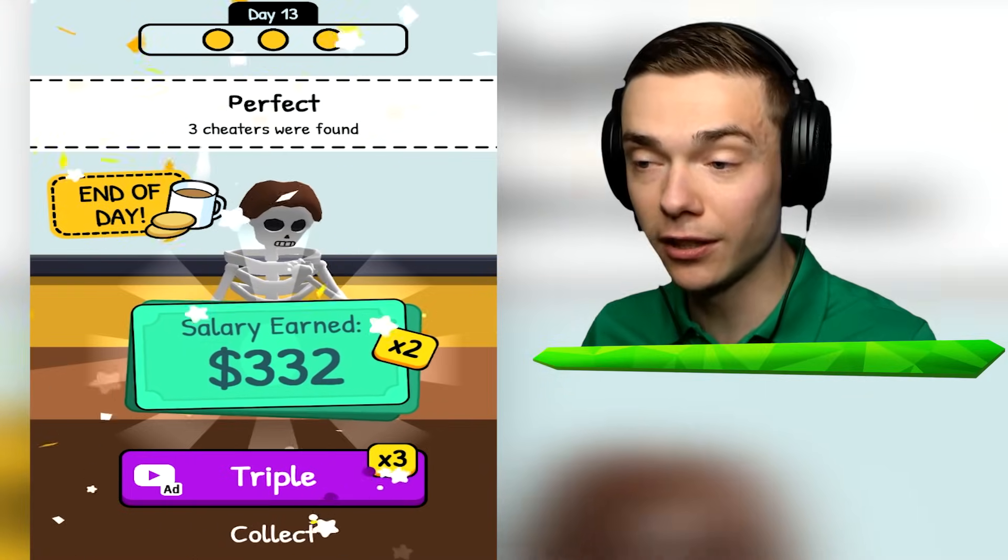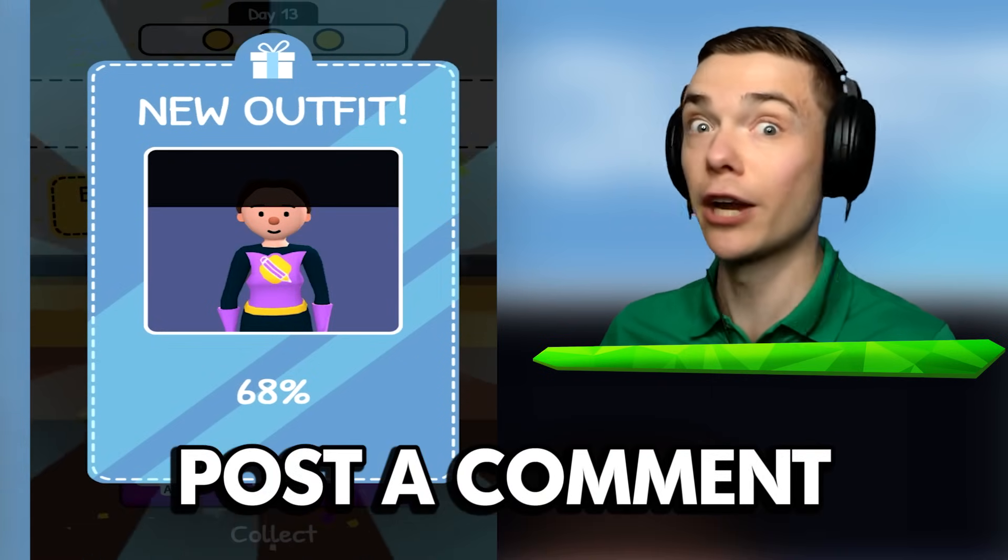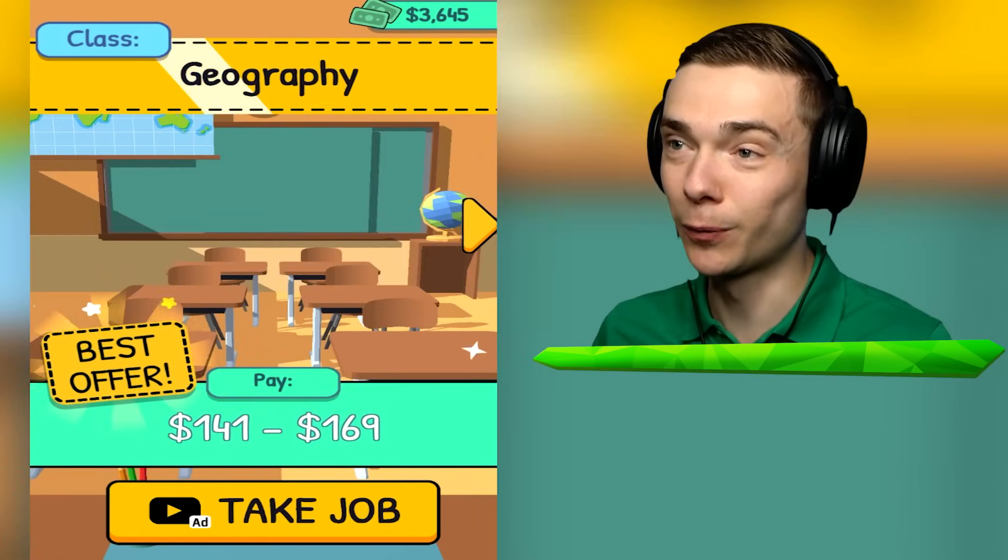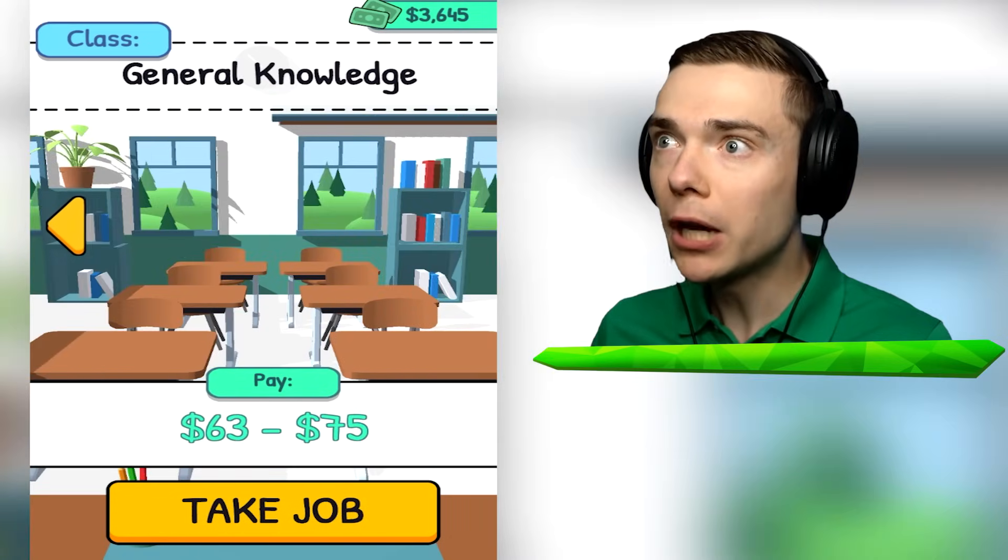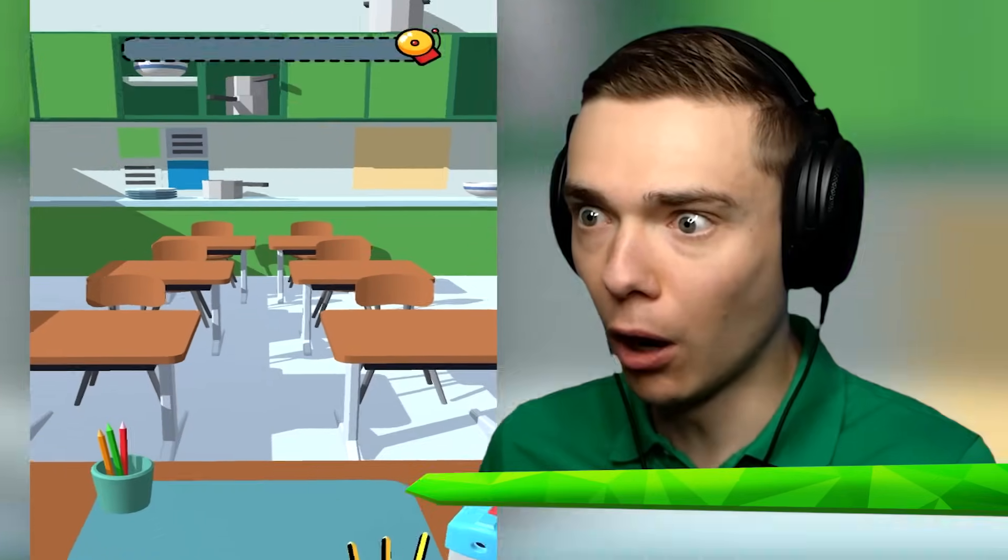That was the best class ever. If your name is Tina and you're watching this right now, post a comment because I know you're cheating. I'm just kidding, Tina. All right. Tap to start. What are we going to do? Geography. We did that one, man. Get out of here. Food. But I like food. I like food a lot. Let's go.